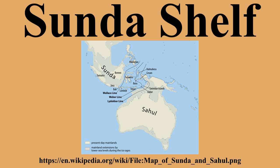Separating these two regions of shallow seas is Wallacea, which encompasses Sulawesi and the thousands of smaller islands making up Nusa Tenggara and Maluku. Within Wallacea lie some of the deepest seas in the world with depths of up to 7,000 meters, passing between Bali and Lombok and Borneo and Sulawesi. Wallacea is marked by a transition zone of flora and fauna first described by Alfred Russel Wallace.